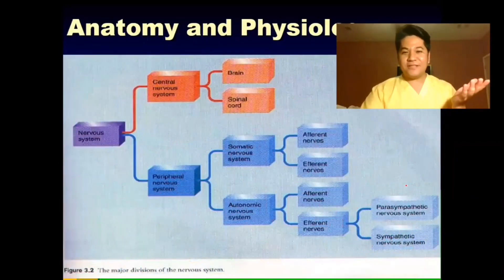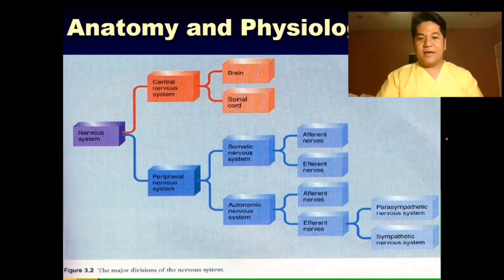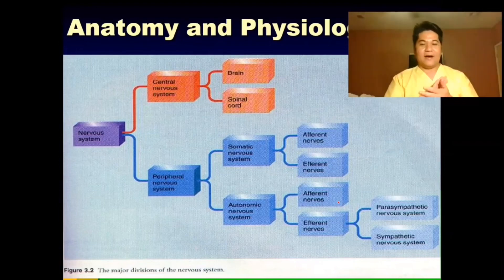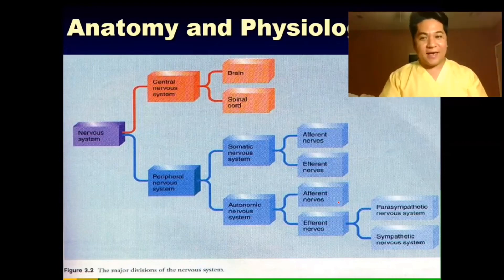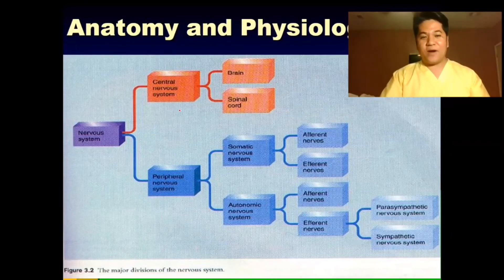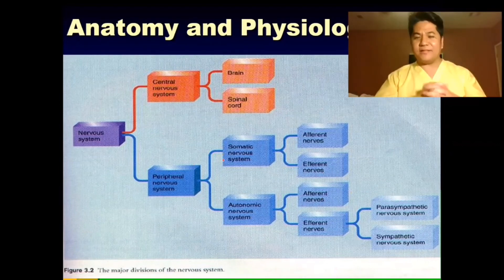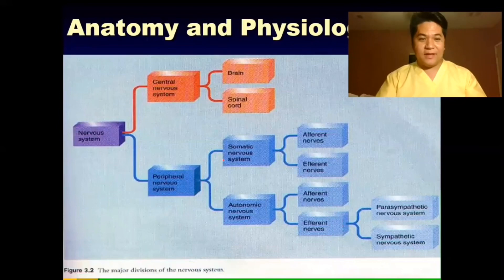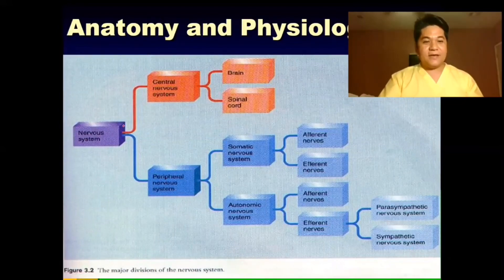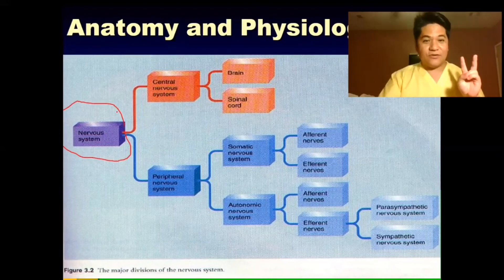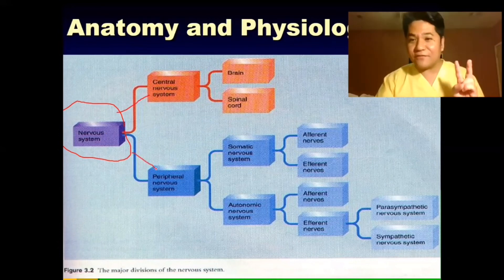Anatomy and Physiology of the Nervous System. The nervous system is a very complicated, complex, sophisticated part of our body. The nervous system comprises your brain, which is responsible for mandating and giving commands, as well as providing sensory and motor functions. The nervous system itself divides into two major parts: your central nervous system and your peripheral nervous system.